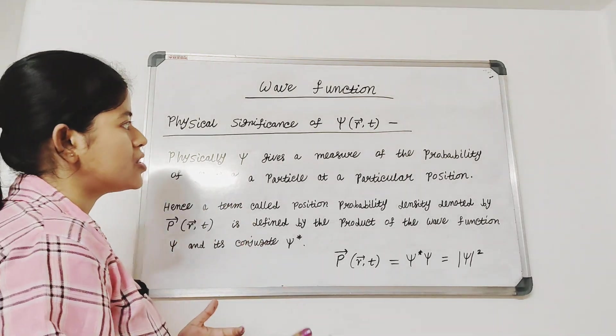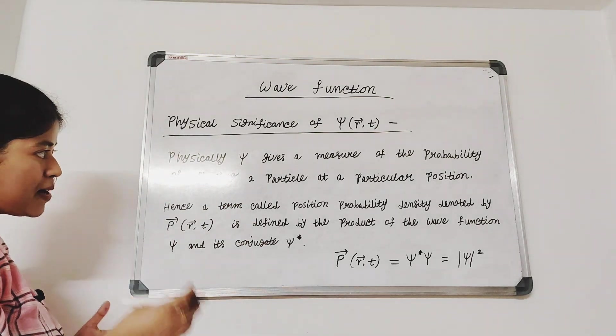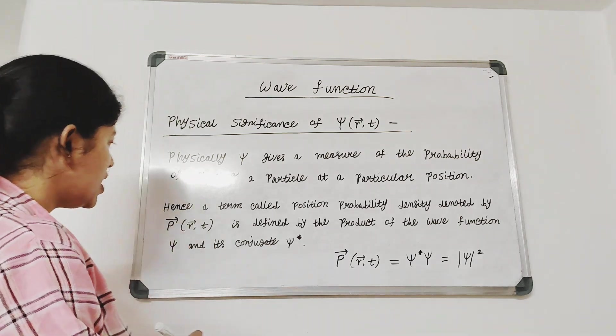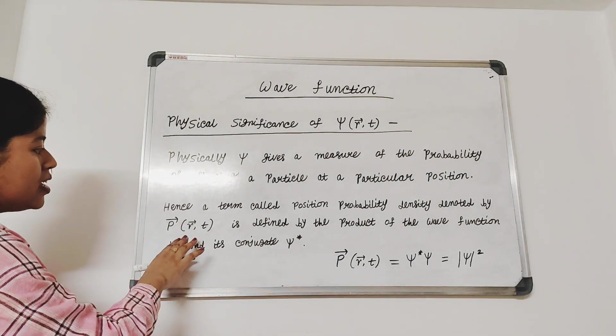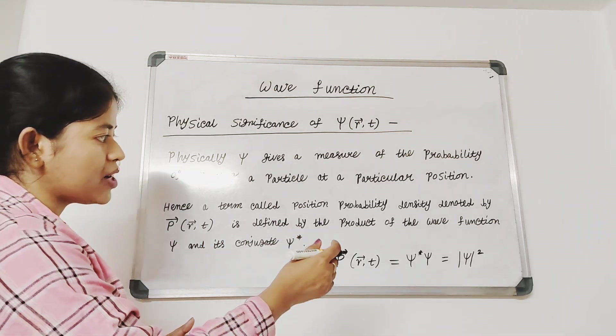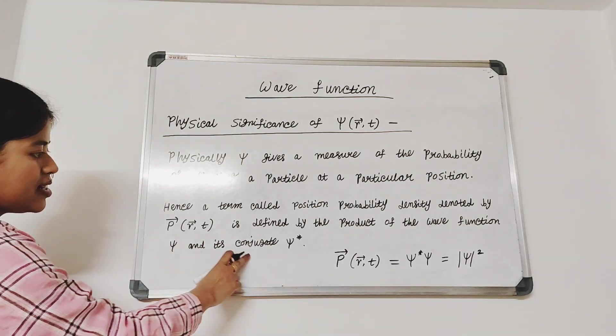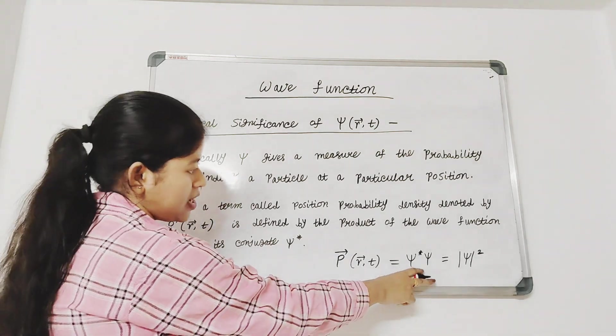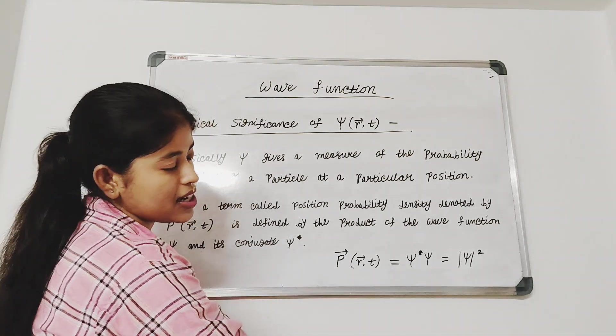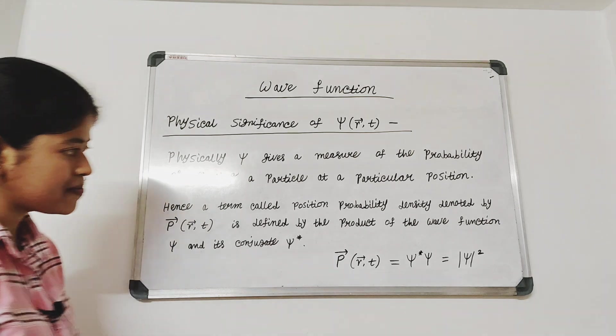Physically, psi gives a measure of the probability of finding a particle at a particular position. Hence, a term called position probability density denoted by p of r and t is defined by the product of the wave function psi and its conjugate psi star. So, p of r t equals psi star psi or we can write it as mod psi square.